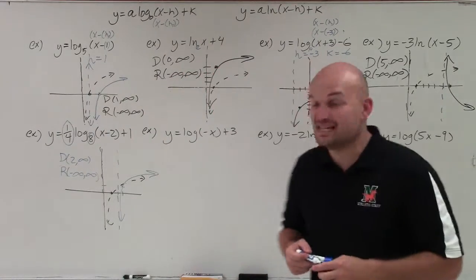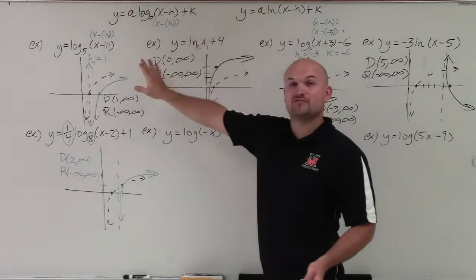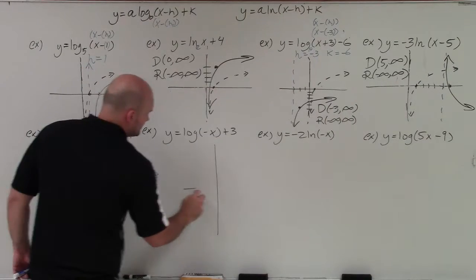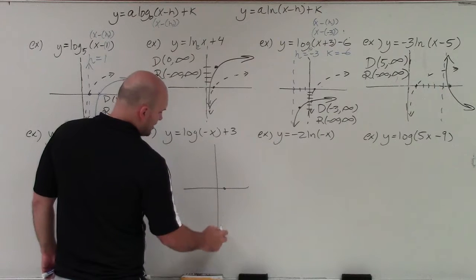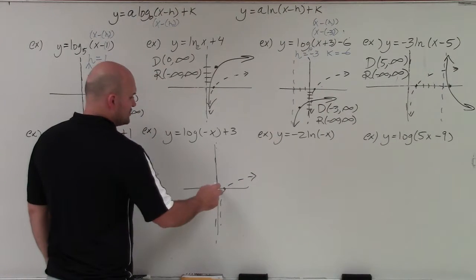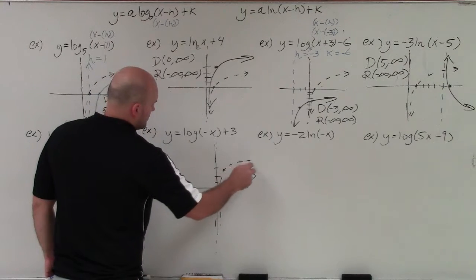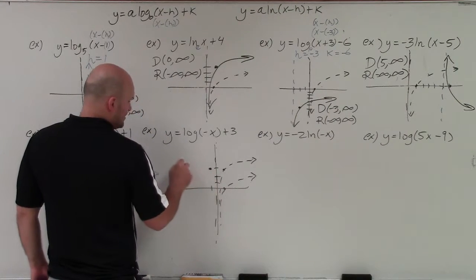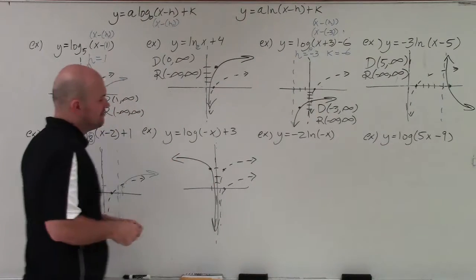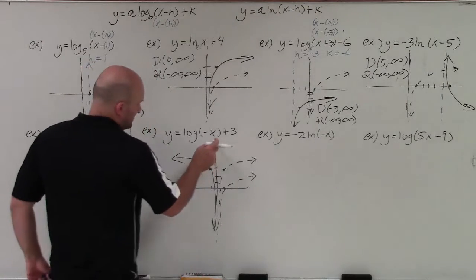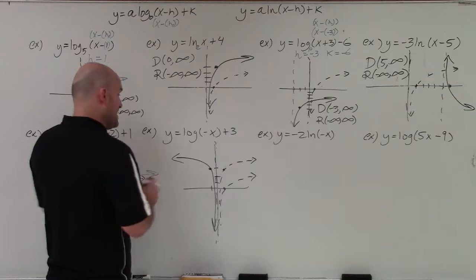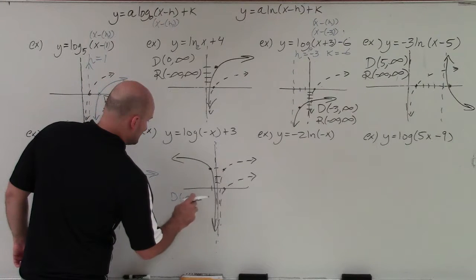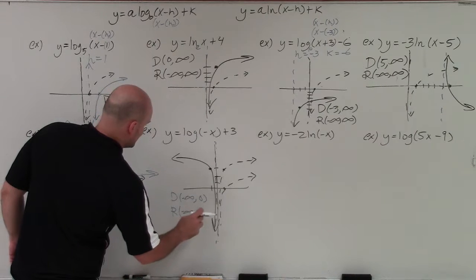This next one has a negative inside the function, so it's reflecting about the y-axis — flipping about the y-axis rather than the x-axis. I also have a plus 3, so I'll graph the parent function, shift it up 3, and then reflect about the y-axis. By reflecting about the y-axis, my asymptote remains at x equals 0. However, the domain now goes infinitely to the left with no asymptote stopping it — so the domain is from negative infinity to 0, and the range is negative infinity to infinity.